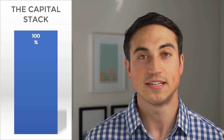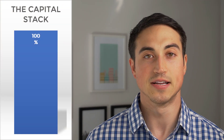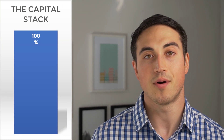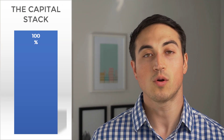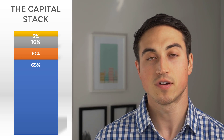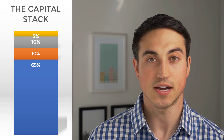An easy way to start thinking about this is by thinking of the capital stack as a bar graph. This bar graph is going to take into account all of the costs to capitalize the project. The capital stack is really just that bar graph broken down into chunks, and each chunk is a different source of capital used to capitalize the project.